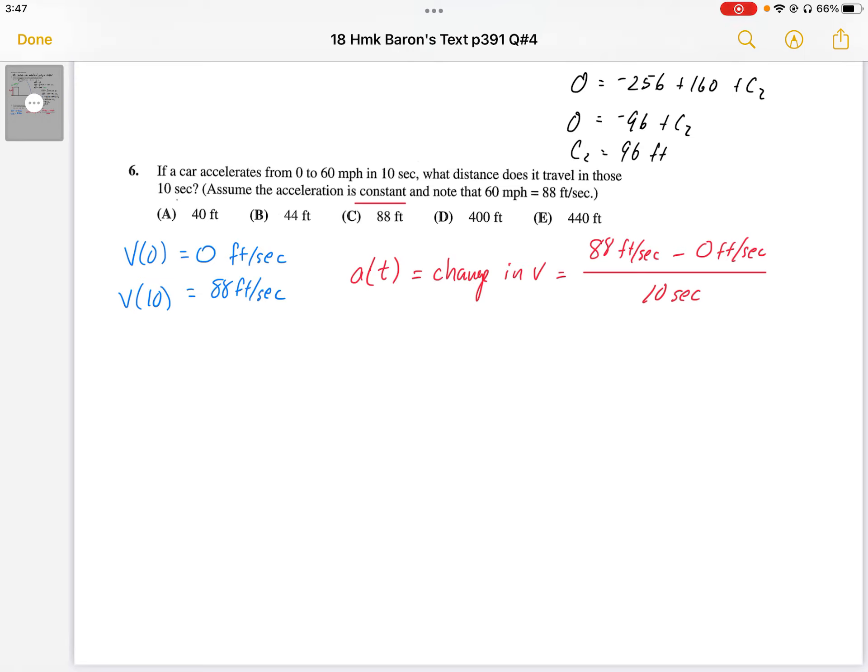So first of all, I'm just going to change it to feet per second. So at t equals zero, we have zero feet per second because that's how much we're starting at our speed or velocity. And at t equals 10, we're at 60 miles an hour or 88 feet per second.